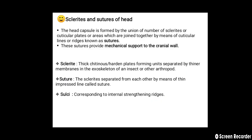The head capsule is formed by the union of a number of sclerites, or cuticular plates, which are joined together by cuticular lines or grooves known as sutures. These sutures provide mechanical support to the cranial wall. A sclerite is a thick, chitinous or hardened plate forming units separated by thinner membranes in the exoskeleton. A suture is a thin impressed line separating sclerites. Corresponding internal strengthening ridges are called sulci.